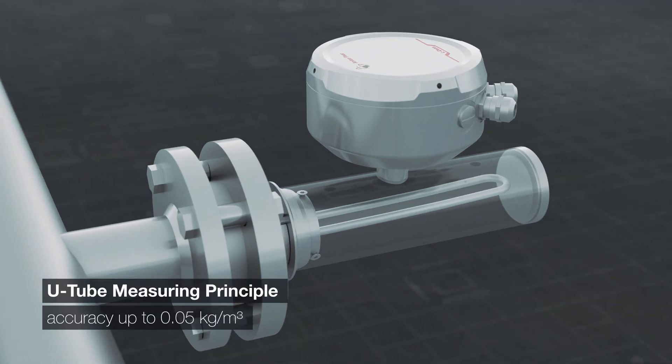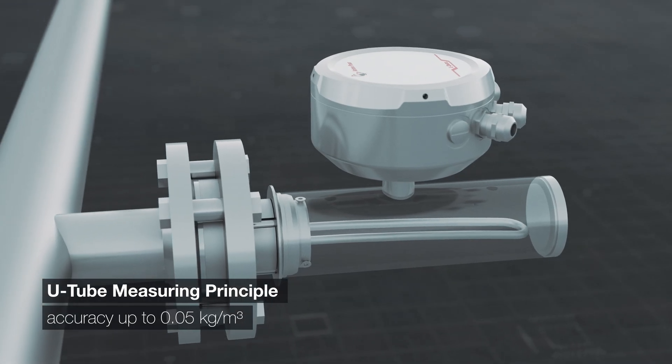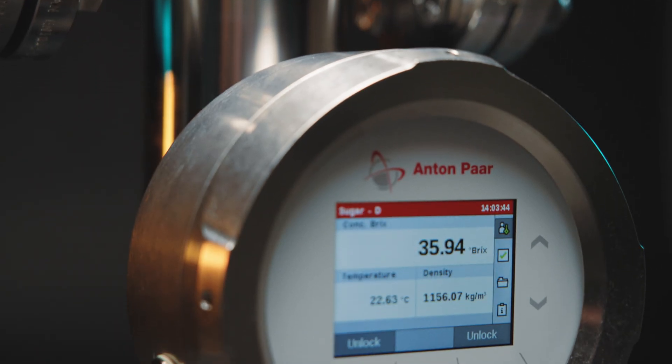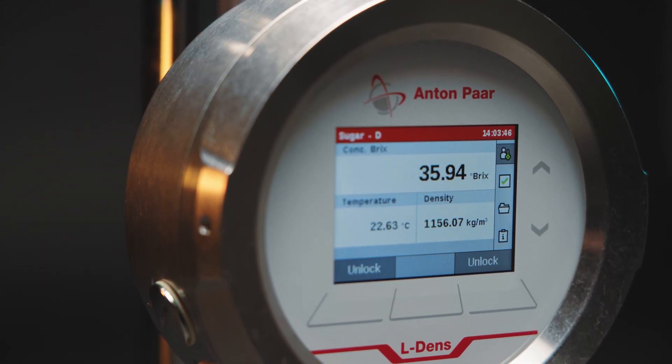The U-tube measuring principle, which is unaffected by the Coriolis effect, determines density with high precision, no matter how process parameters fluctuate.